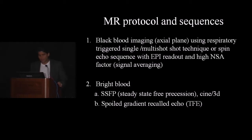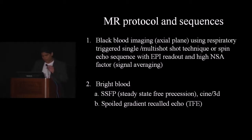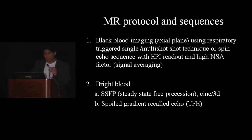In terms of our MR protocol and sequences, we've heard about black blood and bright blood imaging. For looking at pulmonary and systemic veins, an axial stack of black blood — whether single or multi-shot T2 technique or T1 EPI technique — with high NSAs in patients using a free breathing technique. The bright blood technique includes both balanced and unbalanced gradient echo, where the spoiled gradient echo (unbalanced) seems to be the mainstay for anatomical evaluation.